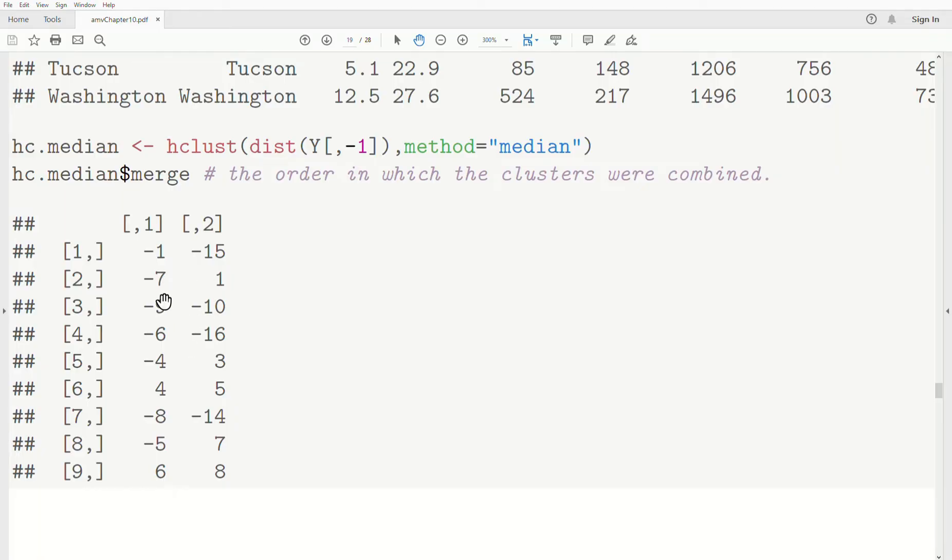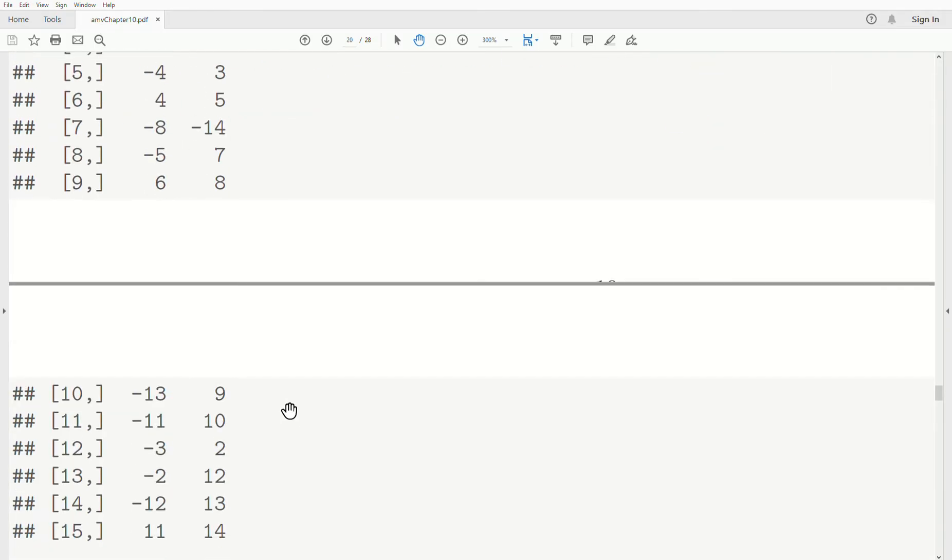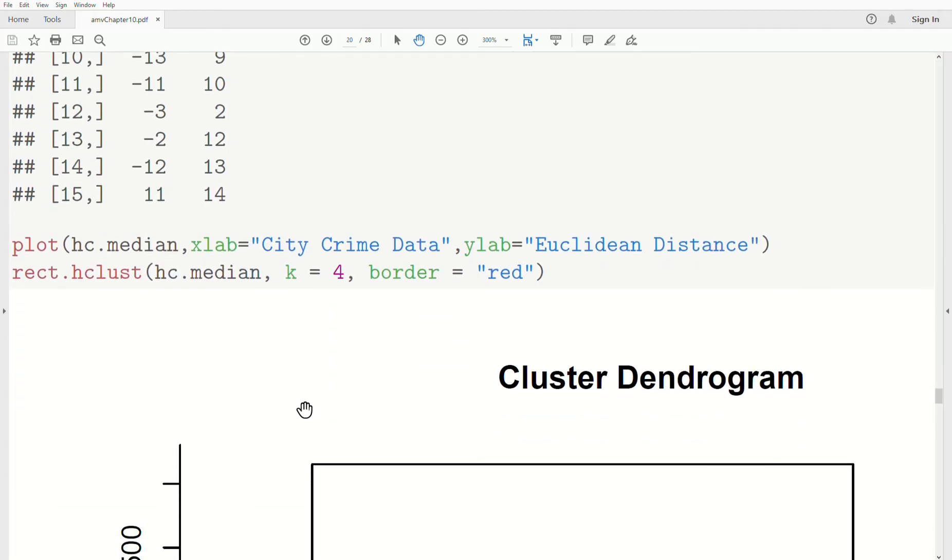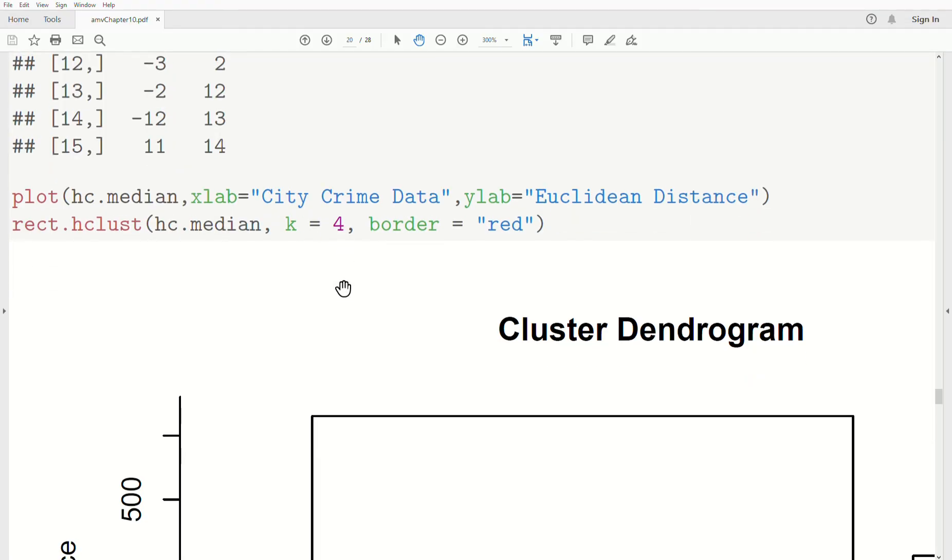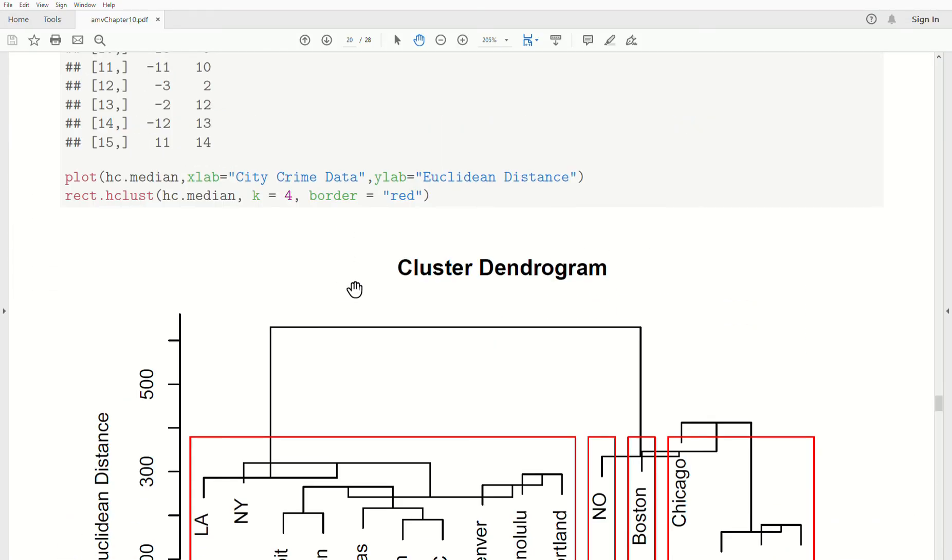I'm not going to go over it, but negatives means an observation was merged. The positive means it's a cluster created in that previous step. So we're going to plot the hierarchical cluster method using median method. We're going to use the rectangular HClust, which creates these pretty little boxes around our dendrogram. We're going to just create four clusters. And this is it.